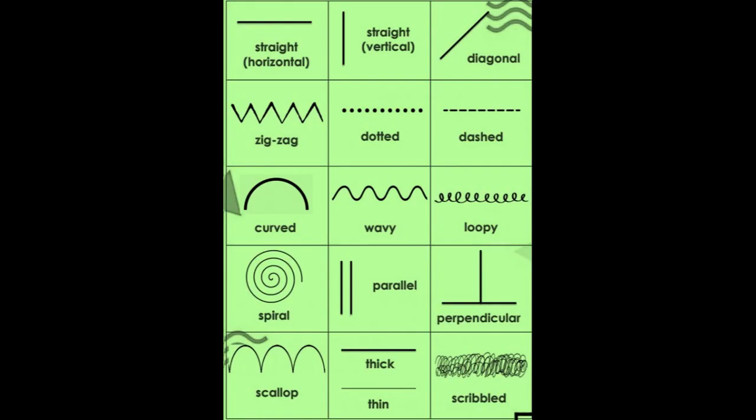A line is a one-dimensional object created by points. It has only length. Lines are used to create shape, form, pattern, texture, develop spaces, control movement of eye and body, establish dominance, and create a cohesive theme in a landscape.